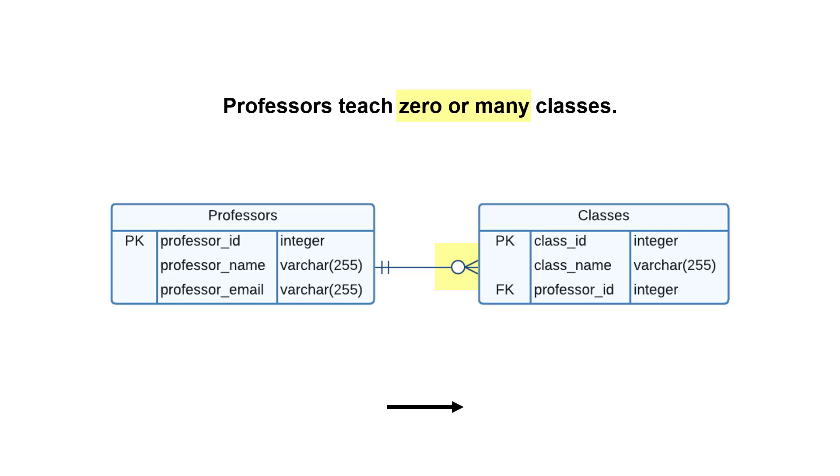Here's an example. We're going to just build on this and we're going to read here from left to right. We'll use the notation on the right, though. So professors can teach zero or many classes. That's the relationship here between these entities or tables. And that notation that's highlighted just means zero or many.